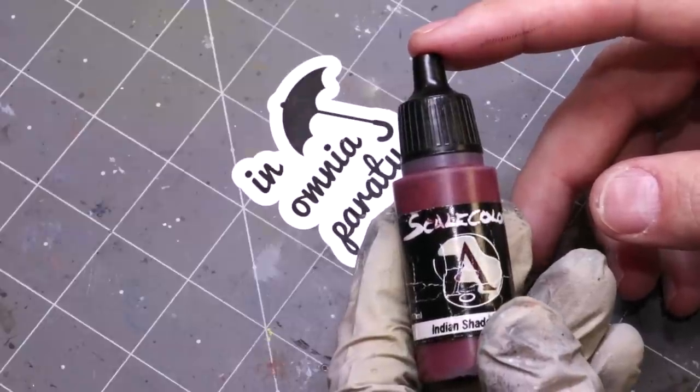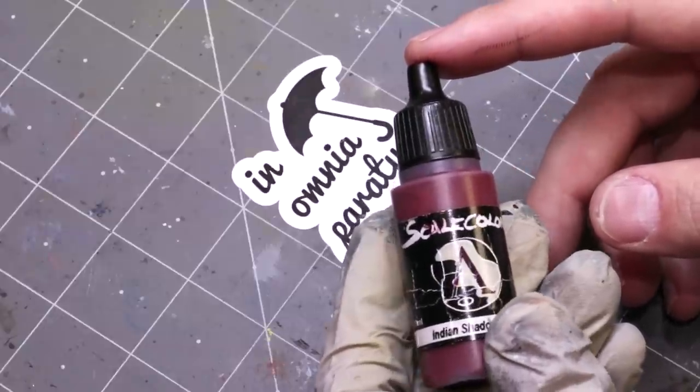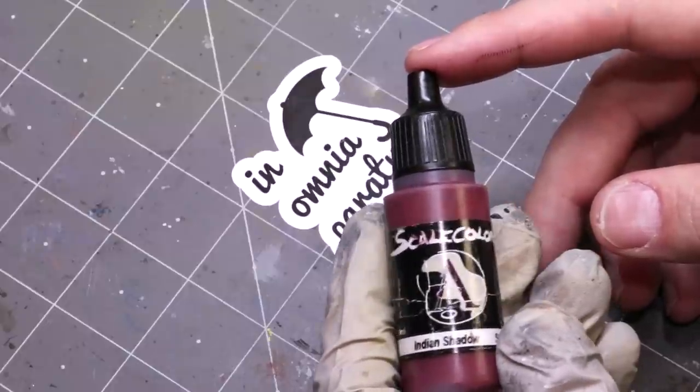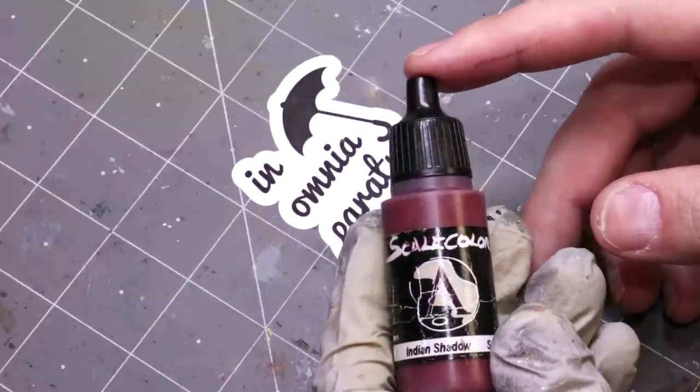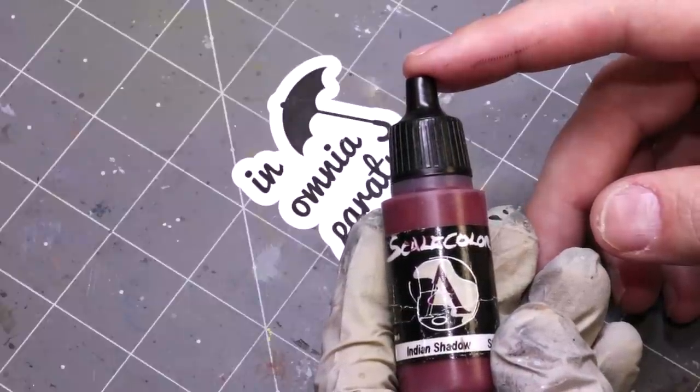If you've ever thinned a paint a whole bunch and then put it on a model and had a bunch of tide marks or what's commonly called coffee staining occur, that's generally because the medium to pigment ratio was off.